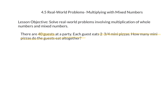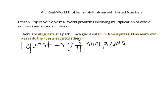If I break apart the information I know: one guest eats 2 and 3 fourths mini pizzas, and there are 40 guests. I'm trying to figure out how many mini pizzas all together those 40 guests ate. That tells me I need to multiply 40 times 2 and 3 fourths.